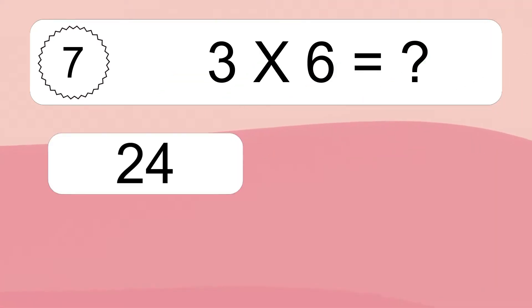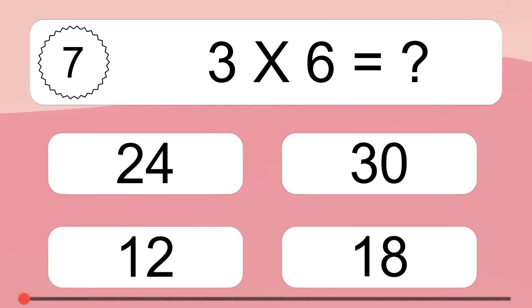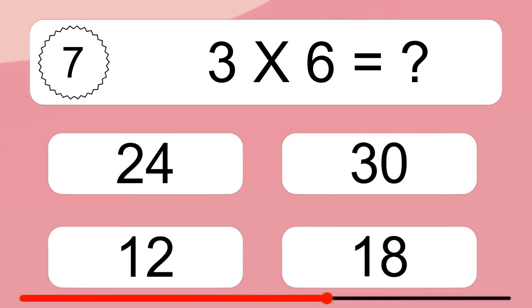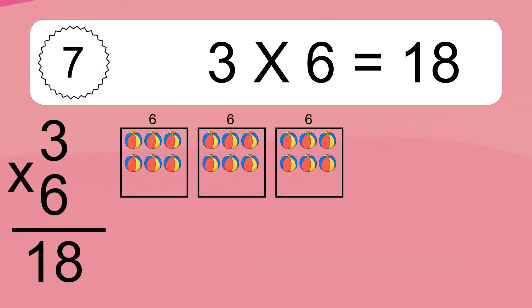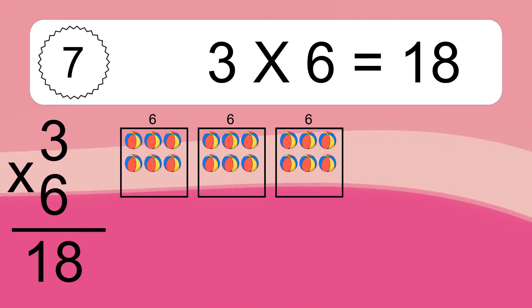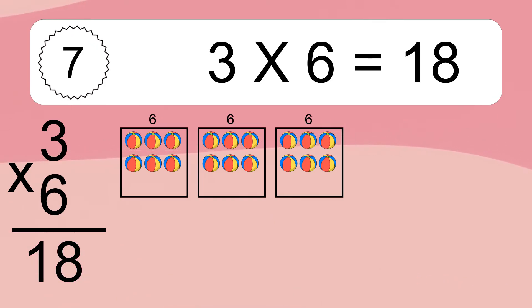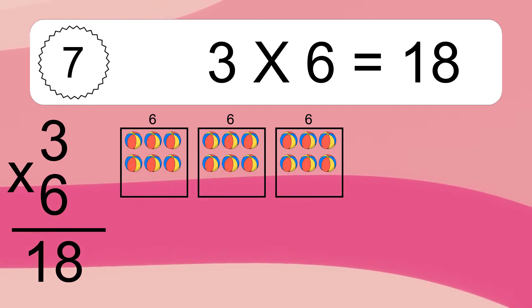3 times 6 equals what? 3 times 6 equals 18. We have 3 boxes, and each box has 6 colorful balls inside. If you count all the balls in all the boxes together, you will have 3 times 6 balls. This equals 18 balls.